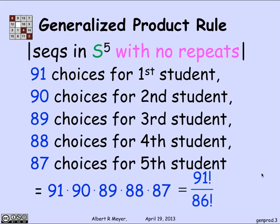Now, one nice way to express the 91 down to 87 in terms of factorials is it's 91 factorial, which is the product from 1 to 91, divided by the product from 1 to 86, which cancels out the first 86 terms in 91 factorial, leaving you with exactly 87 through 91 product.